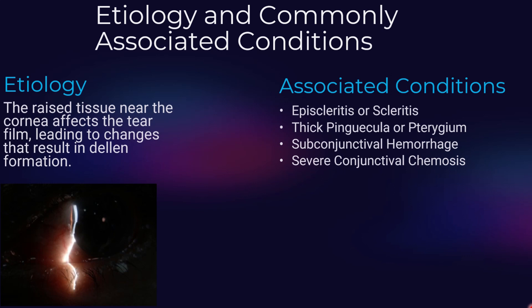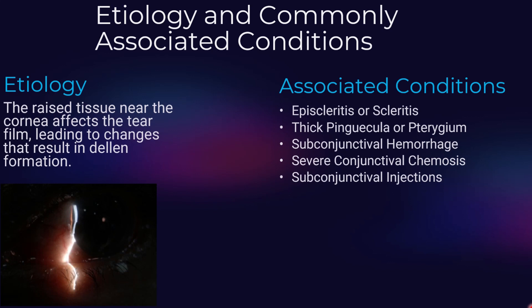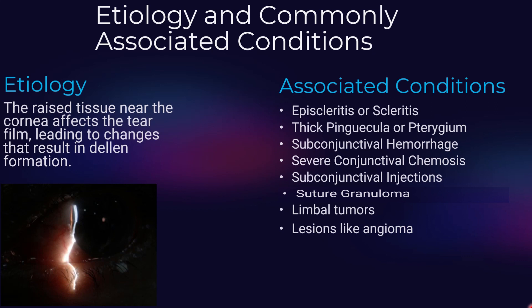Severe conjunctival chemosis — swelling of the conjunctiva. Subconjunctival injections — any medications injected under the conjunctiva can also cause dellen. Suture granuloma is a reaction to stitches used in eye surgery. Limbal tumours is the growth of abnormal tissue at the border of the cornea and sclera.